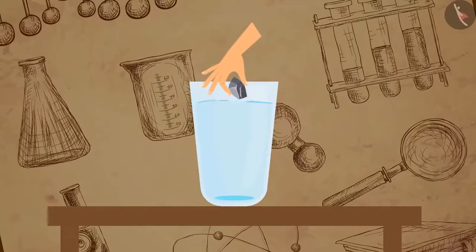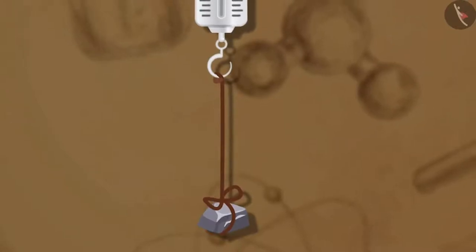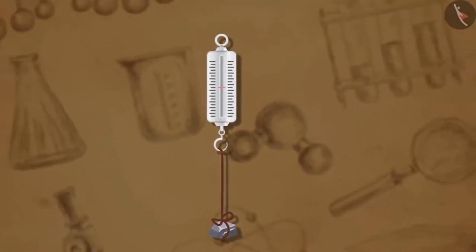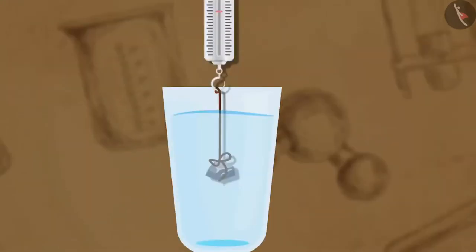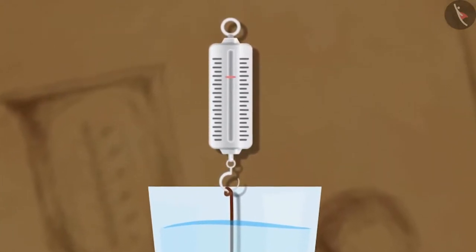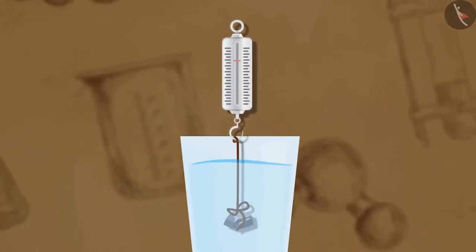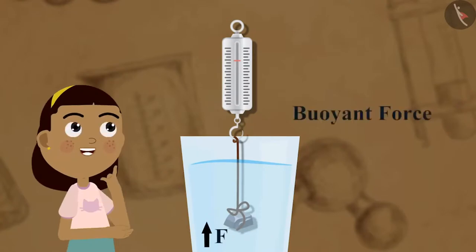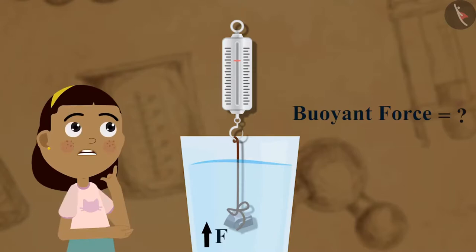Now let's see what happens to the weight of a substance when immersed in a fluid. Take a piece of stone and tie it at the end of a spring balance with a string, and note the reading. Then immerse the stone in a glass of water and take the reading again. You will notice a decrease in the reading, which means a decrease in the weight of the stone. This is because there is an upward buoyant force acting on the stone. What is the magnitude of this buoyant force? The answer was found by the Greek scientist Archimedes.